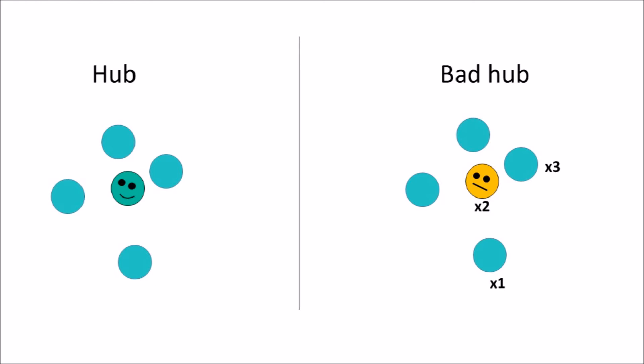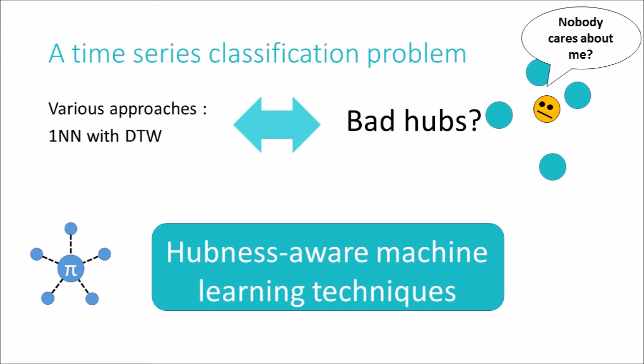We say that a hub is bad if its class label differs from the class labels of those instances that have it as their nearest neighbor. These bad hubs are responsible for a surprisingly large fraction of the total classification error. Therefore, taking the presence of bad hubs into account would improve accuracy. Thus, we propose to use hubness-aware machine learning techniques, which are among the most promising techniques for time series classification, but haven't been applied to person identification based on typing patterns yet.